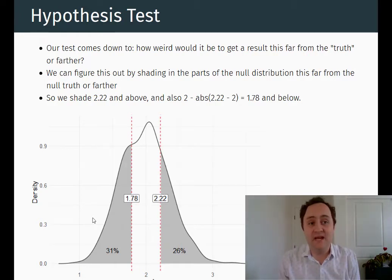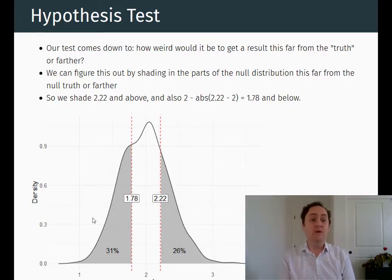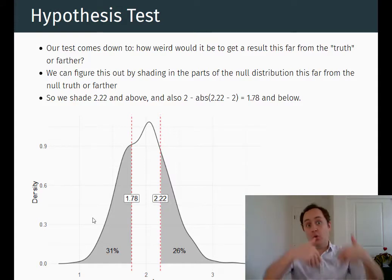So if 2.22 is 0.22 above 2, then 1.78 is 0.22 below 2, and I'm seeing whether I'm far enough away. We're basically looking, is the estimate that we got too weird to actually believe that null distribution that we started with? And here what we see is that when I put those two lines on, roughly 26% of the sampling distribution is above my estimate, and 31% is below that 1.78. So about a little bit more than half the time, we're going to get some estimate that is as weird or weirder than the estimate we actually got under the assumption the null is true. That's pretty likely.